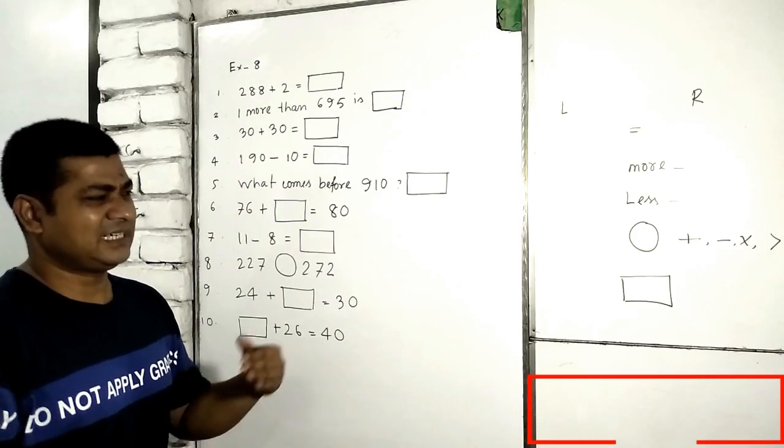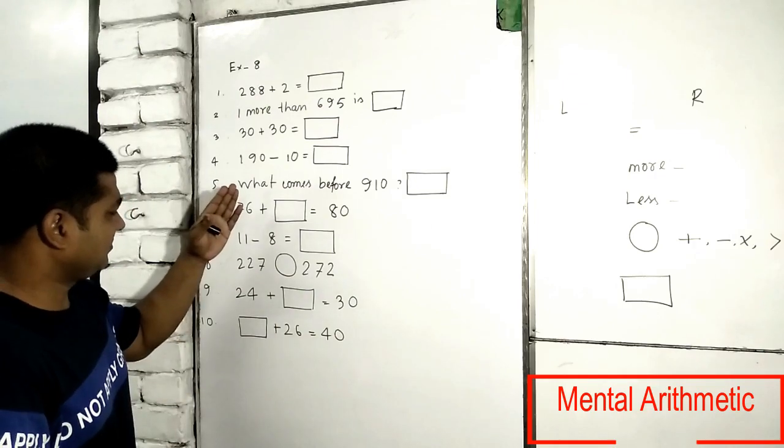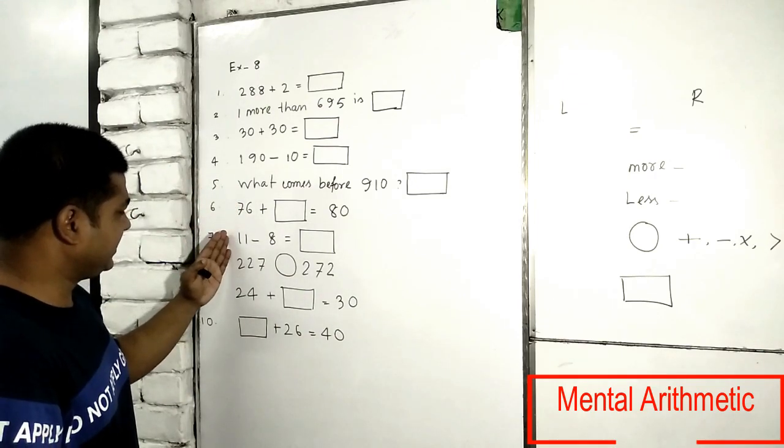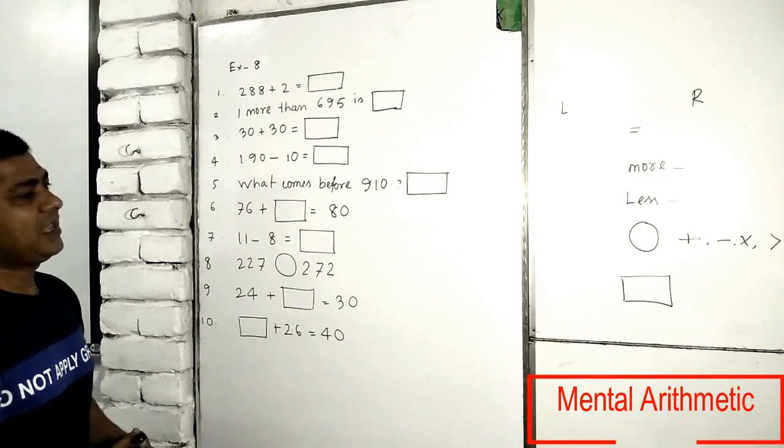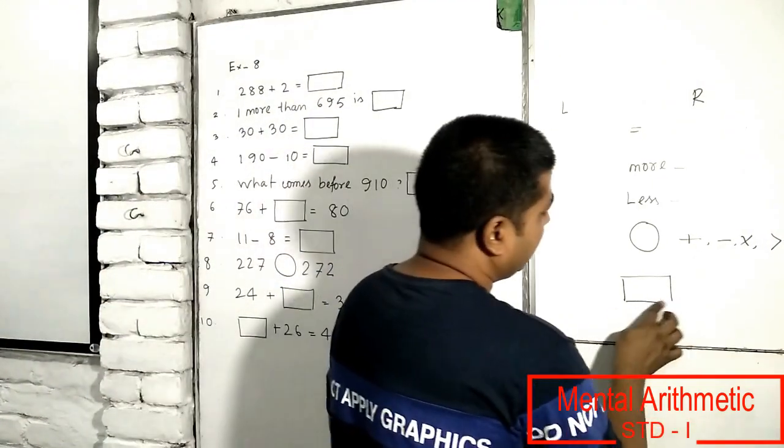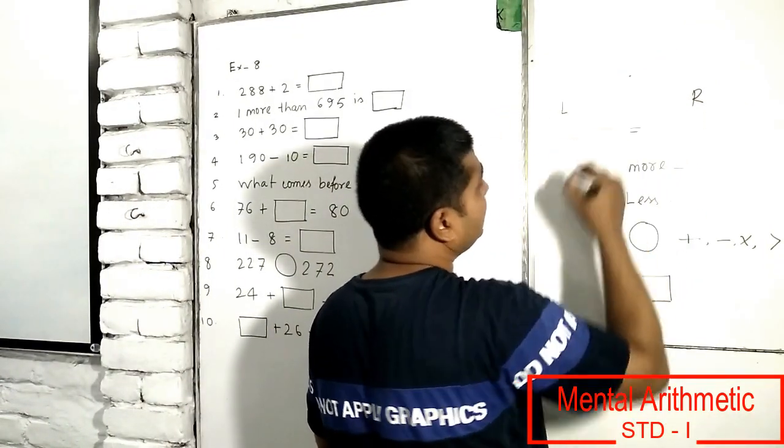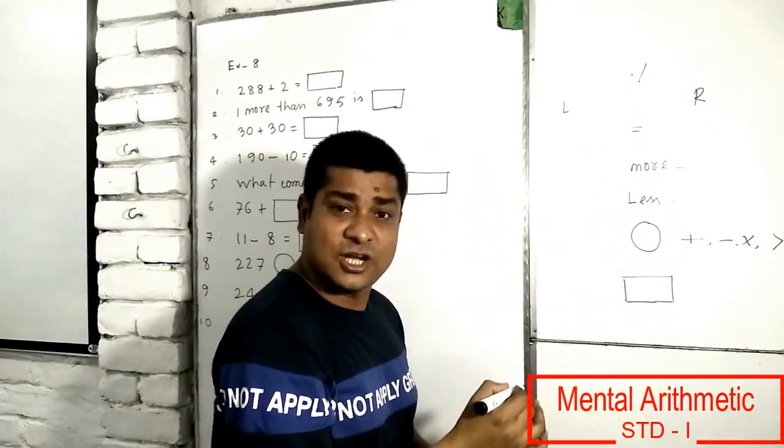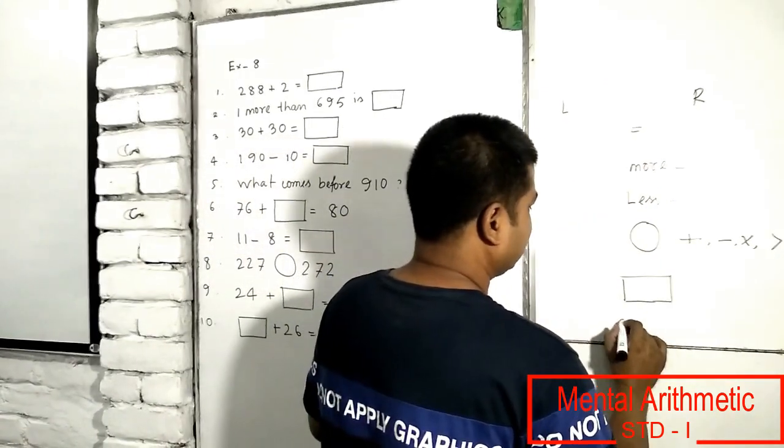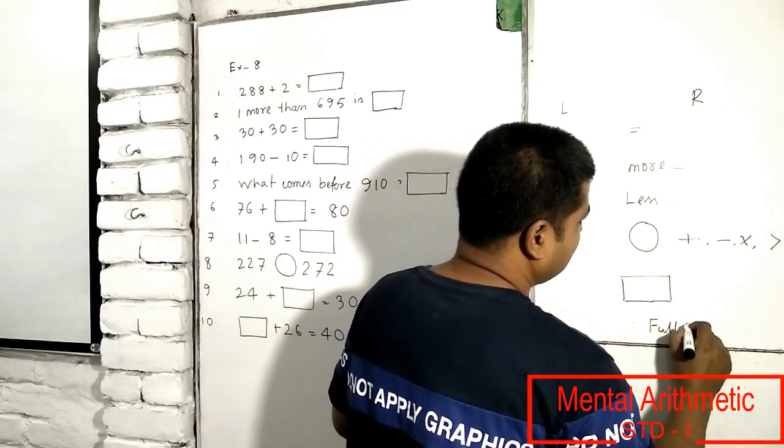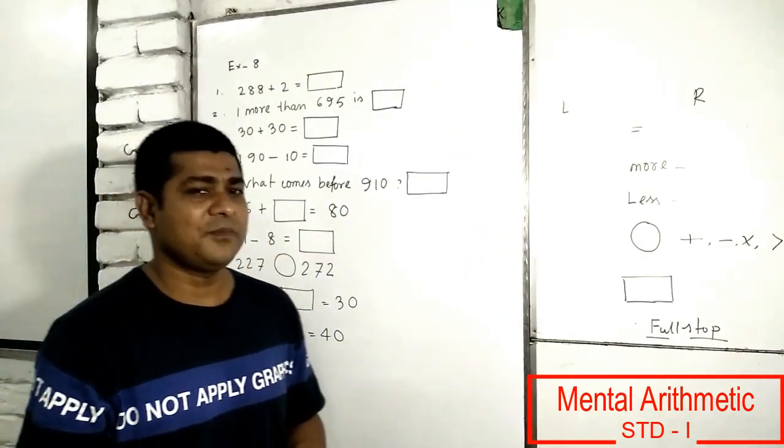Another thing is simple subtraction, simple addition, but all are horizontally. Another thing is about full stop. Full stop means you have to stop fully.